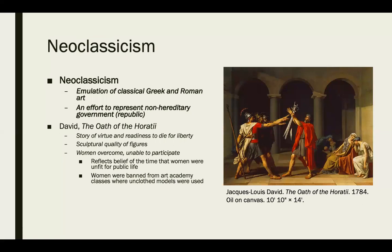Neoclassicism is our first movement. It's an emulation of classical Greek and Roman art, carried forward to the late 1700s. It's an effort to represent non-hereditary government, or the republic. With a lot of war and rebellion from traditional government, paintings depicted stories from Greek and Roman times to represent those feelings carrying over to modern day. This piece is David's 'Oath of the Horatii' — a story of virtue and readiness to die for liberty.